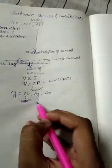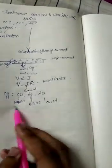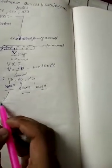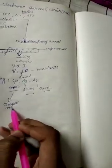Examples of conductors are Cu, Ag, and Au — that is, Copper, Silver, and Gold. Among these three, we most commonly use copper because it has the cheapest cost.